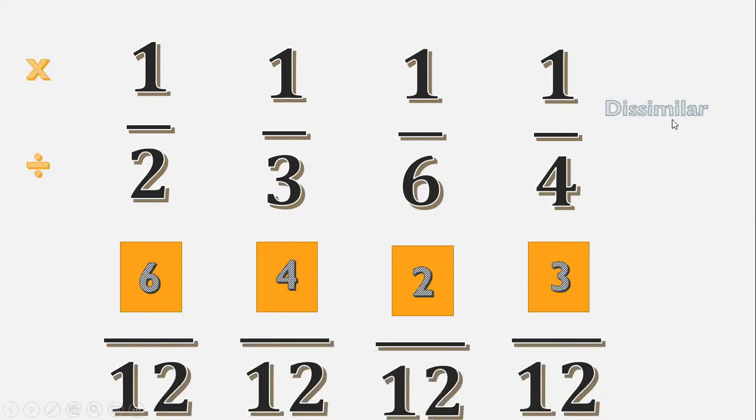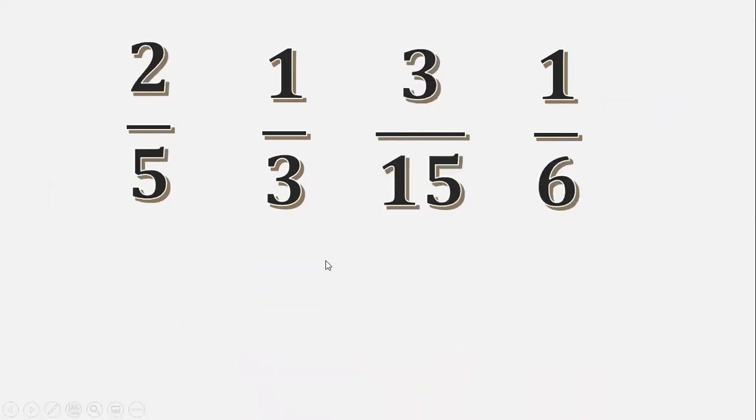Then, the top are dissimilar fractions. When we get to the bottom, those are the similar fractions. Okay?